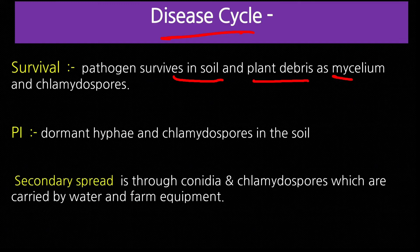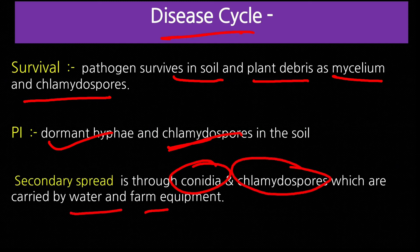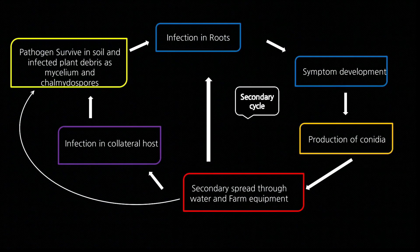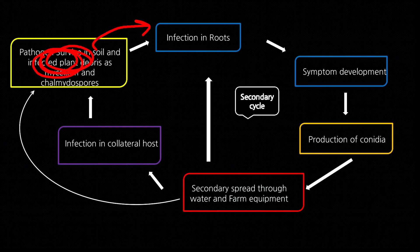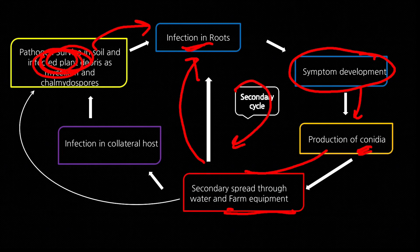Disease cycle: pathogen soil में और crop debris में mycelium और chlamydospores के रूप में survive करता है। Primary infection hyphae या chlamydospores द्वारा होती है। Secondary spread conidia और chlamydospores द्वारा होती है — water या farm equipment के साथ move करते हैं। अगले season में roots में infection, xylem और phloem में multiply — water translocation कम — symptom दिखता है। Conidia water द्वारा या intercultural operations के समय नए plants तक पहुँचते हैं।